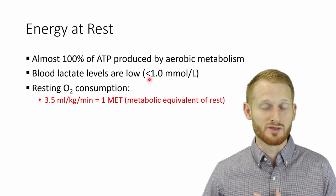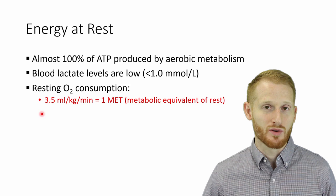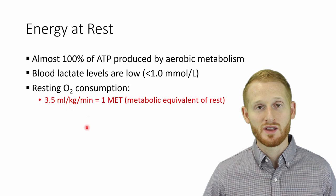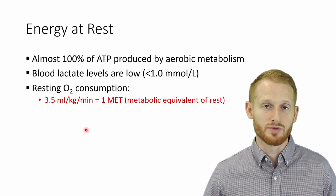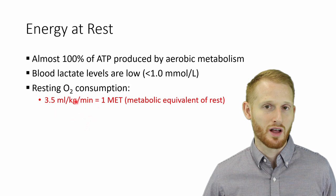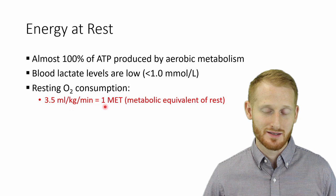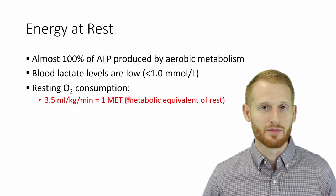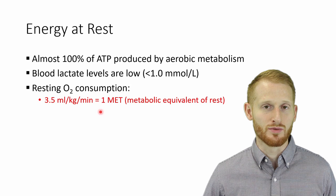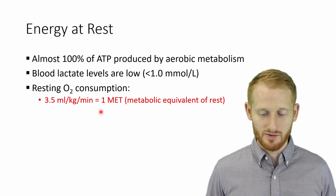When we are at rest, most people are going to use approximately 3.5 milliliters of oxygen per kilogram of body mass per minute just sitting, in order to sustain themselves and produce energy aerobically. This 3.5 has been turned into a constant that we call one MET — the metabolic equivalent of rest. This is sometimes brought up especially when looking at exercise prescriptions, where people use METs as a nice, easy way of prescribing exercise.